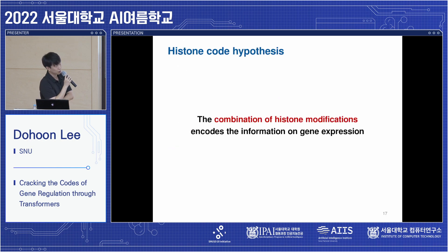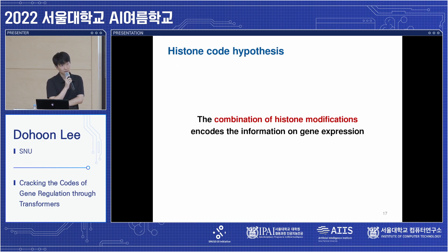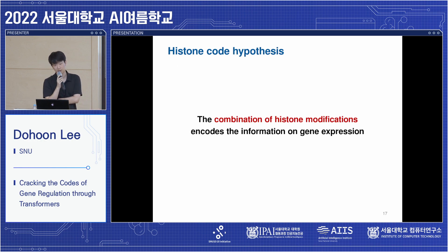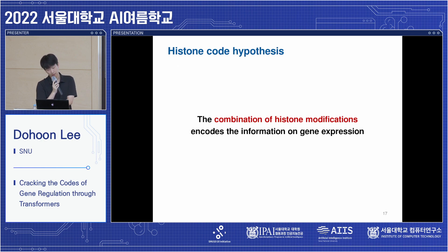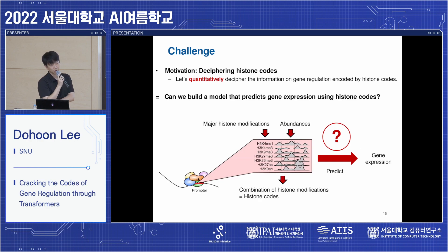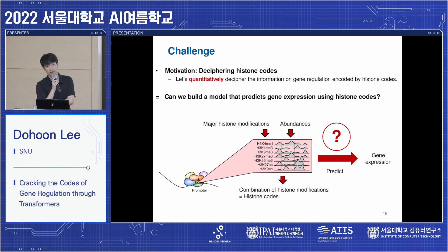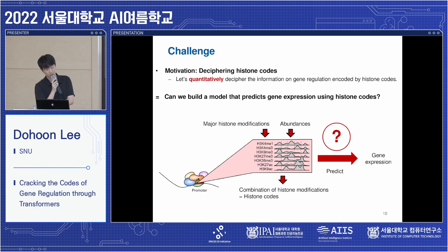Here comes the histone code hypothesis. It states that the combination of histone modifications encodes the information on gene expression. Biologists have long been studying this concept, and there are essential qualitative rules for the histone code hypothesis already, but the motivation of this study is to decipher the histone code quantitatively. That means we want to build a model that translates the histone code to the amount of gene expression — can we build a model that predicts gene expression using histone codes?